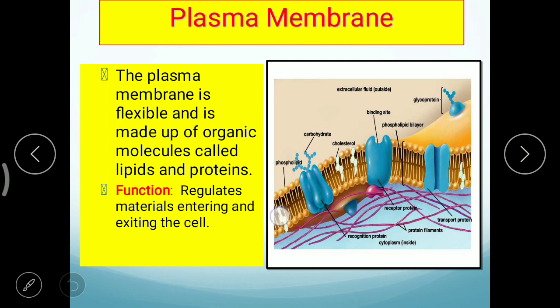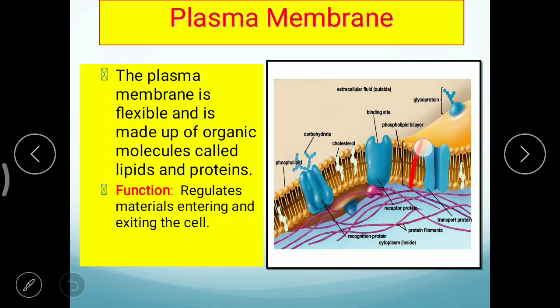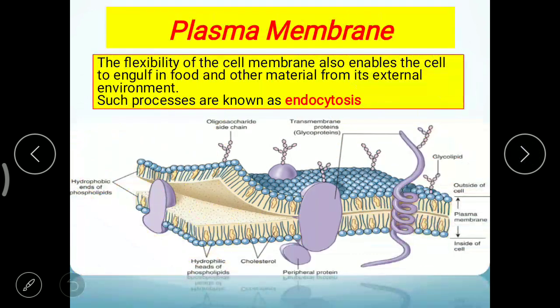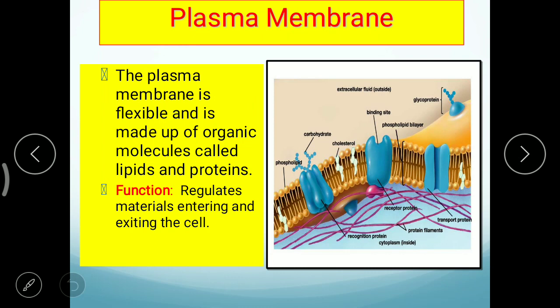बीच में आते हैं तो यहाँ पर जाल जैसी संरचना दिखती है जो कि आपकी hydrophilic tail है — यह phospholipid bilayer है। इसके functions की बात करते हैं — हर चीज का अपना काम होता है। पहला function है: regulate material entering and exiting out of the cell — यह कुछ चीजों को अंदर-बाहर आने के लिए permit देती है।